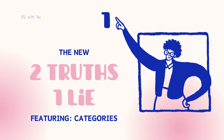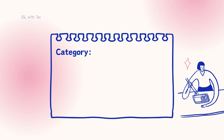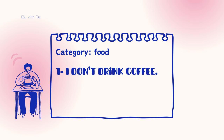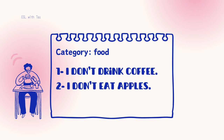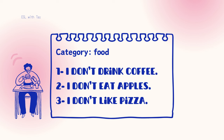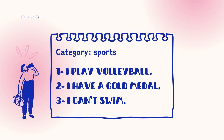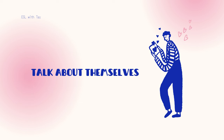Activity one is Two Truths and a Lie, featuring categories. Pick a category or a topic — I always start off with food. Students must come up with three food-related sentences about themselves. Two options are supposed to be true and one false. Students take turns guessing which facts are true and which is false. Then you can move on to another topic and students write three other sentences and start guessing again.